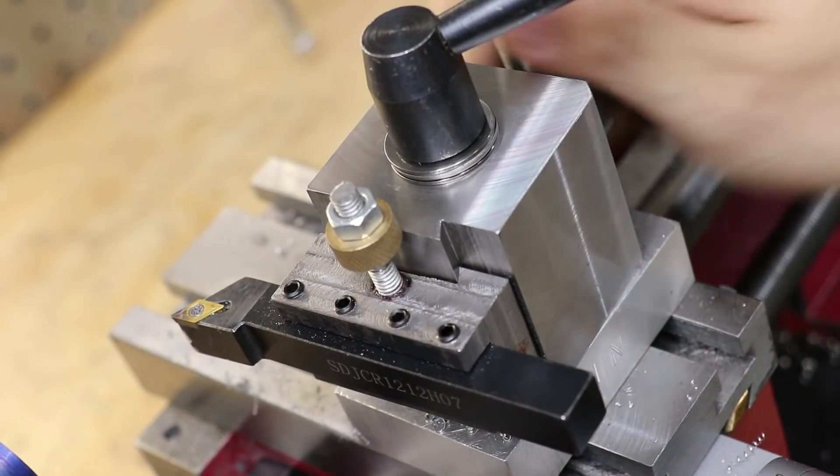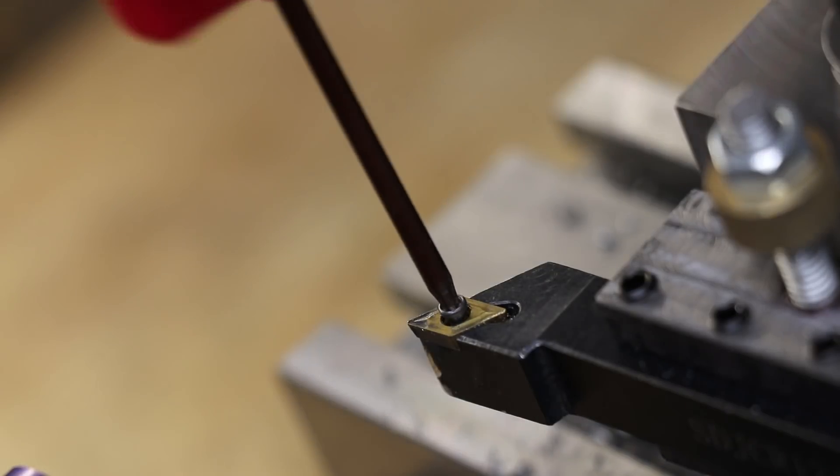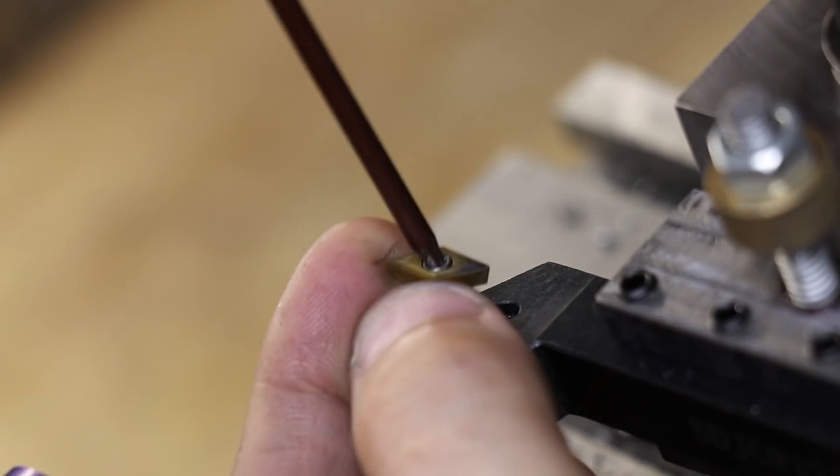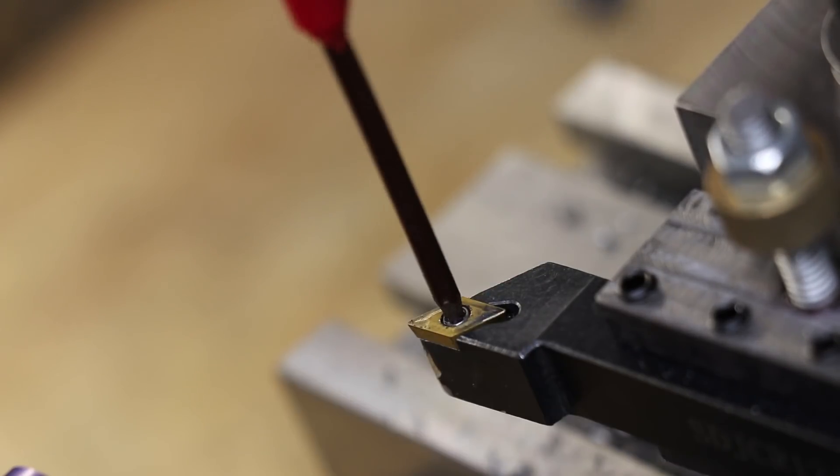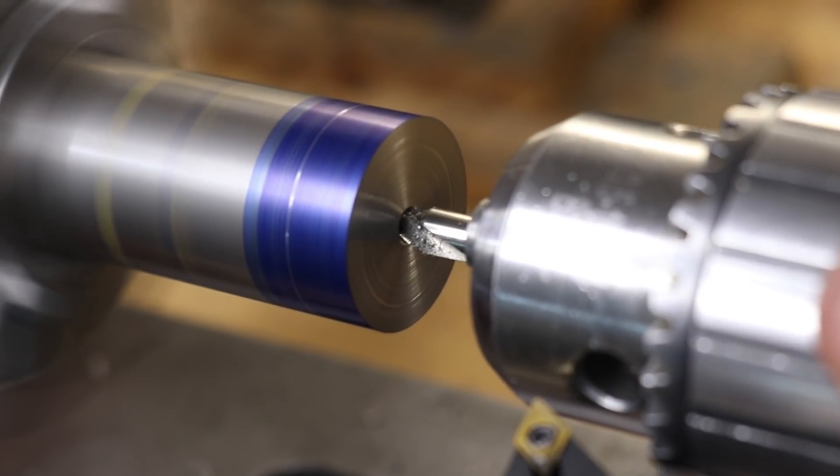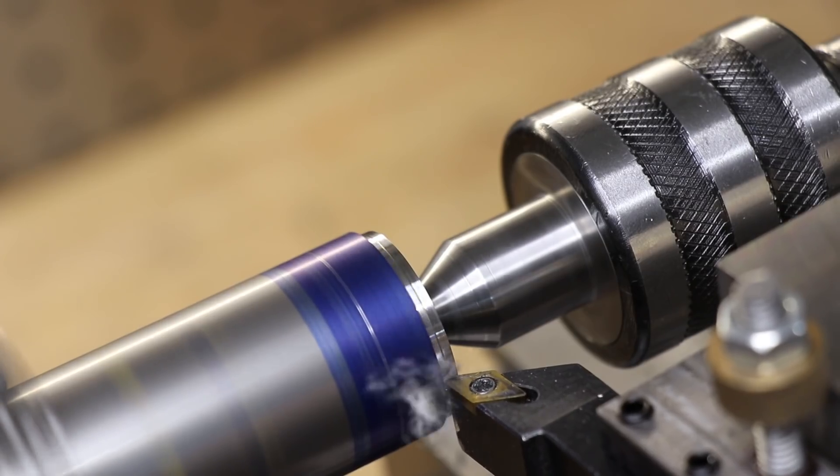The first thing I'll form will be the extrusion that holds the slitting saw in place. Now I'll do the bulk of the stock removal using carbide since I'm able to take greater cuts with carbide than I can take with high-speed steel.